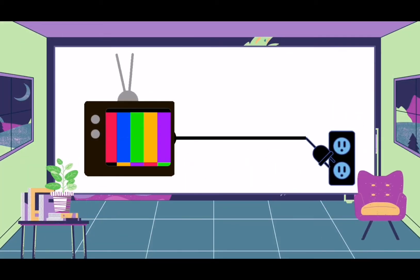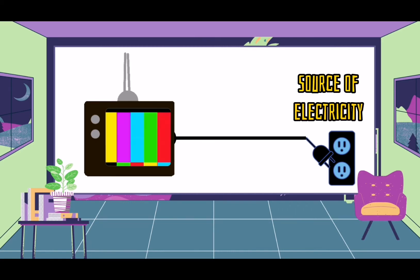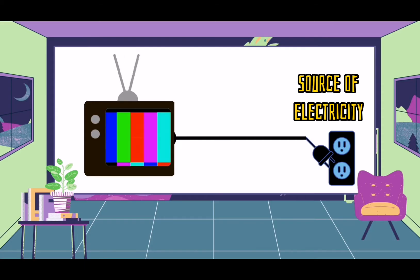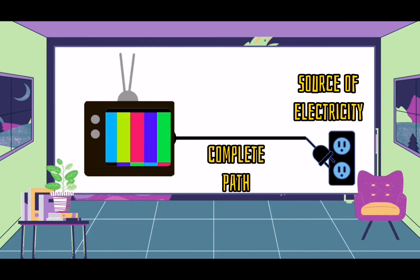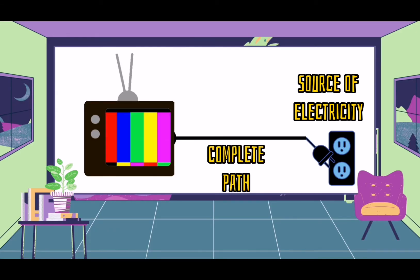There are two conditions that must be met in order for electricity to flow. First, there must be a source of electricity. Dapat meron tayong pagkukunan ng electricity. Second, there must be a complete path for the electricity to flow through. Kailangang maayos at kumpleto ang path o daraanan ng electricity patungo sa gagamitin nating appliances.